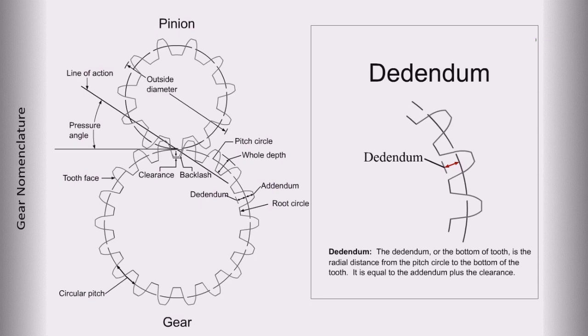Dedendum. The dedendum, or the bottom of the tooth, is the radial distance from the pitch circle to the bottom of the tooth. It is equal to the addendum plus the clearance.